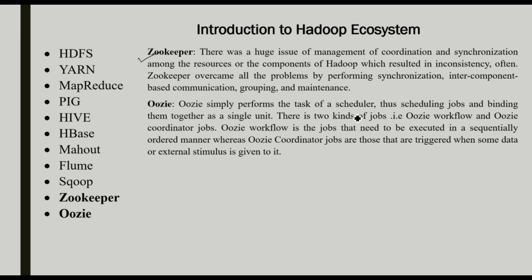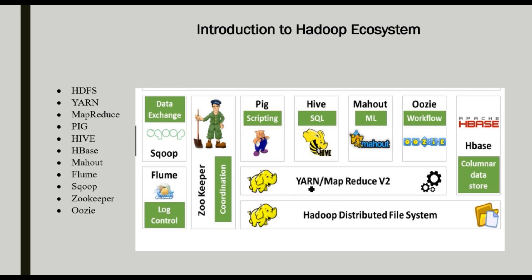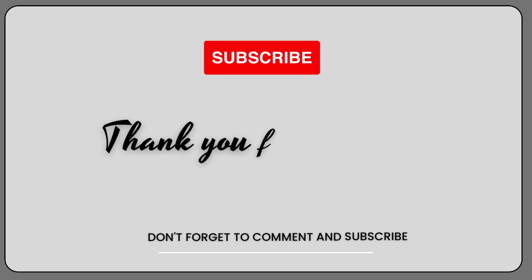Oozie is used to schedule a lot of work — it schedules jobs, communicates, and coordinates all work within the Hadoop ecosystem. This is the Hadoop ecosystem overview. We will discuss each component in detail in the next videos. Hope it is clear. Thank you.